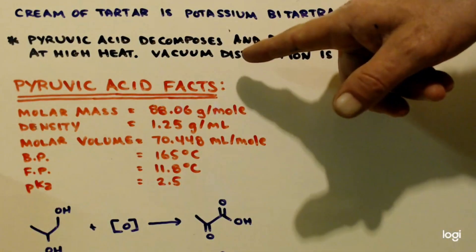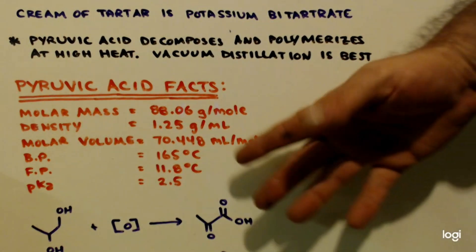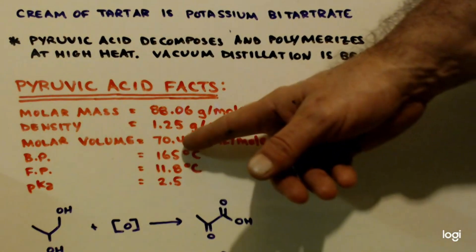Pyruvic acid decomposes and polymerizes at high temperatures. So vacuum distillation is best. There's a few facts about pyruvic acid, molar mass, density, molar volume, boiling point, freezing point, boiling point 165C, pKa.